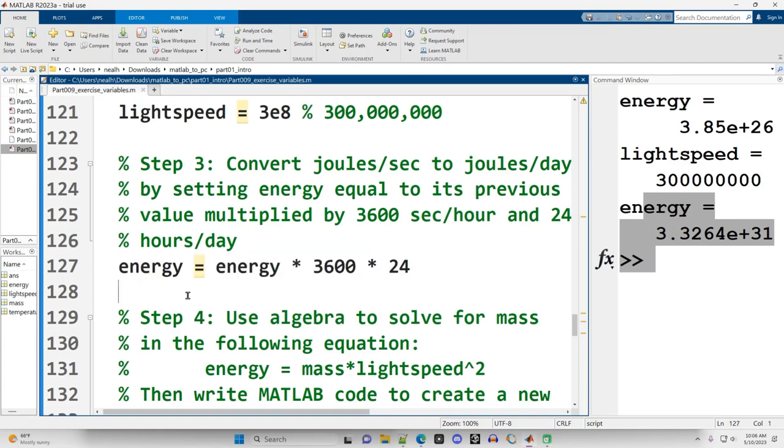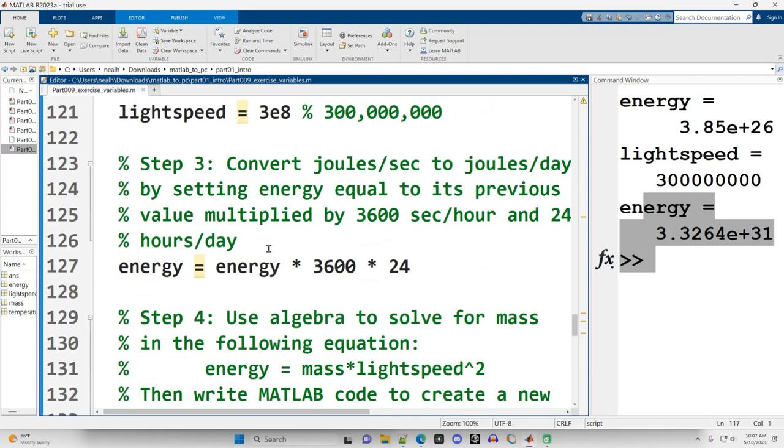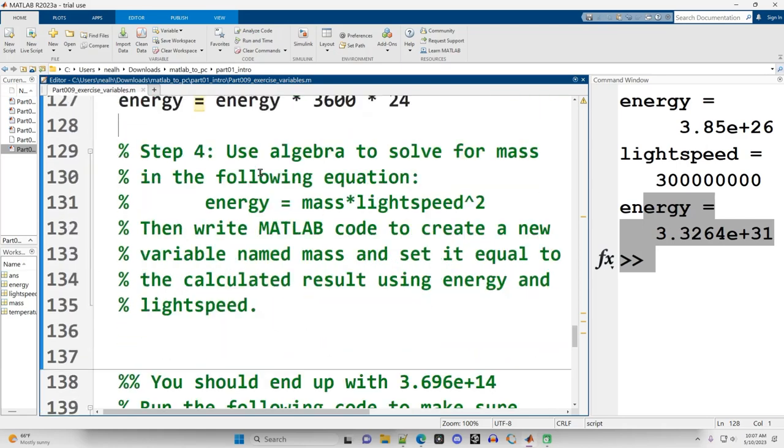Step three convert joules per second to joules per day by setting energy equal to its previous value multiplied by 3600 seconds per hour and 24 hours per day. Okay so we've got energy but it's currently in joules per second so we want to convert it. Energy times 3600 times 24. All right so there's our new energy value. This is a little bit of a weird looking thing. You won't see this in math class because this equal sign is not the same as the equal sign in math class. This equal sign is saying put the results of this calculation on the right into the box named energy on the left and replace the previous value in that box. So here what's our current energy value? Well it's whatever this number is up here and then multiply that by 3600 and multiply that by 24. Whatever that new result is that replaces the old value of energy in this variable here.